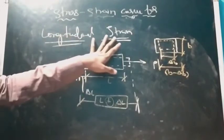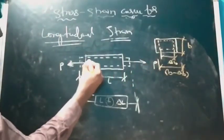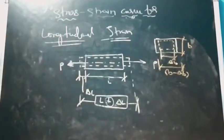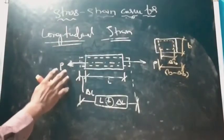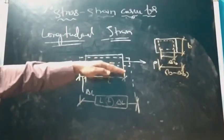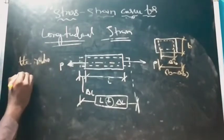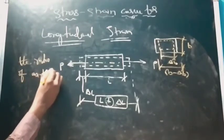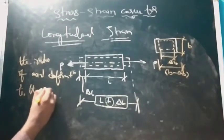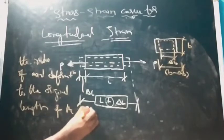Longitudinal strain is defined as: when a body is subjected to axial tensile loading, there is deformation in the length. The ratio of axial deformation (delta L) to the original length (L) of the body is known as longitudinal strain.